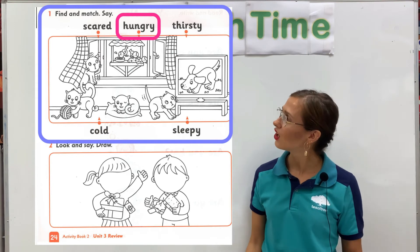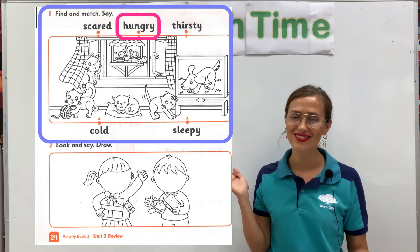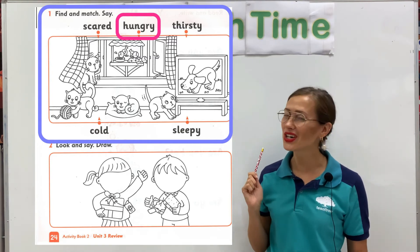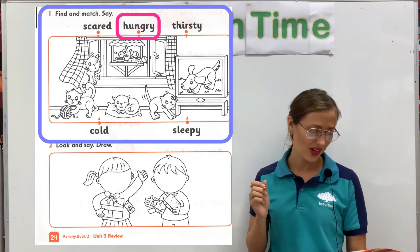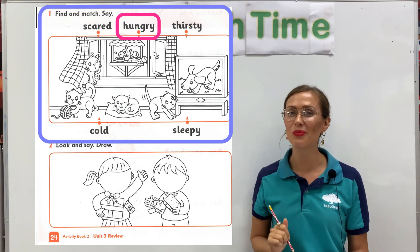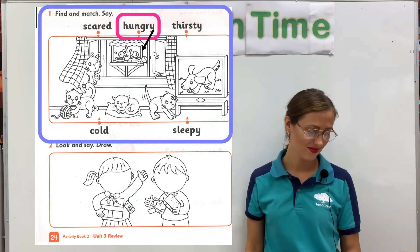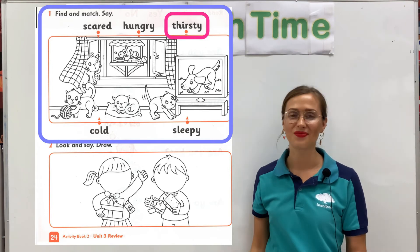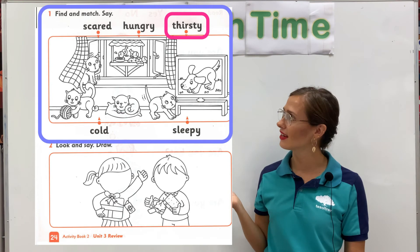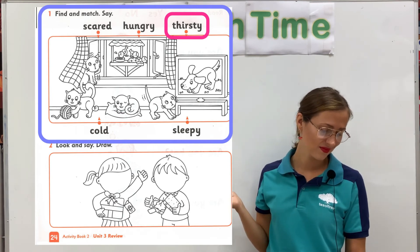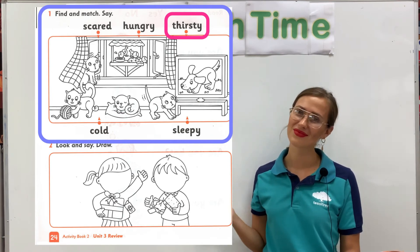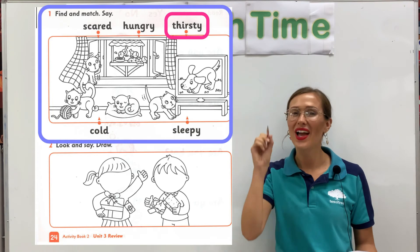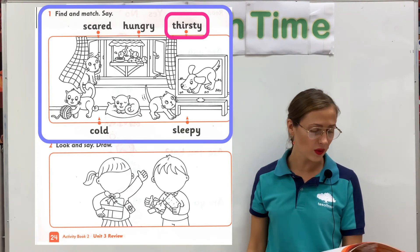Our next feeling: Hungry. Who is hungry? Yes, the birds are hungry. Can you make a line from hungry to the birds? Our next feeling: Thirsty. Who is thirsty? Yes, there is one bird that is very thirsty. Can you make a line from thirsty to the thirsty bird?